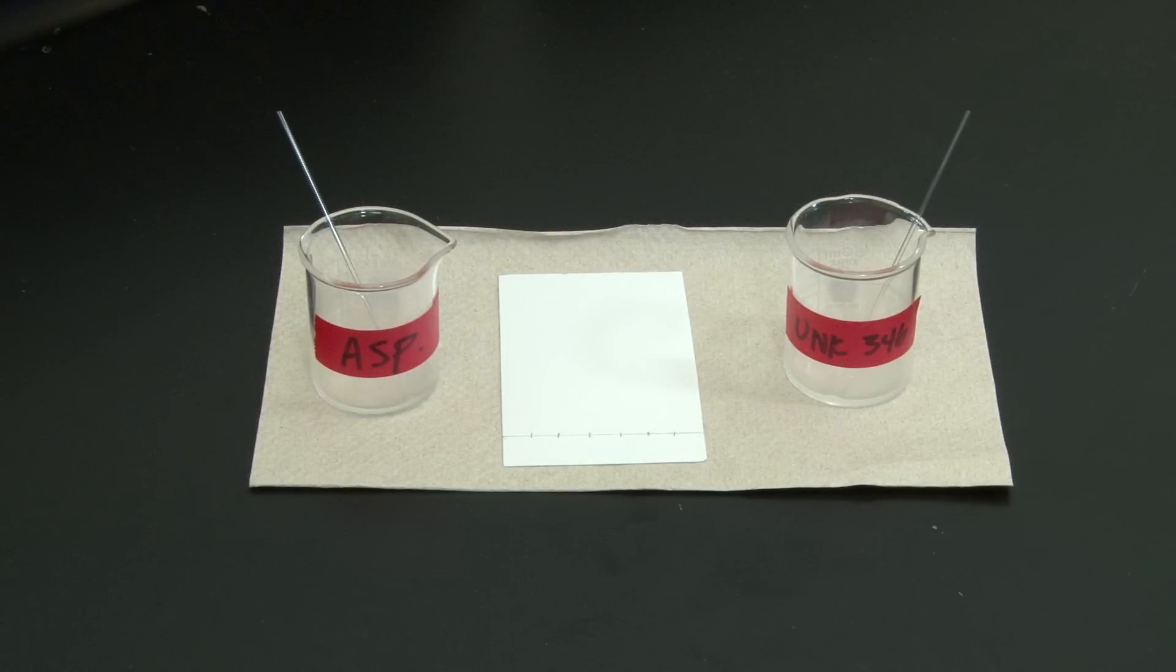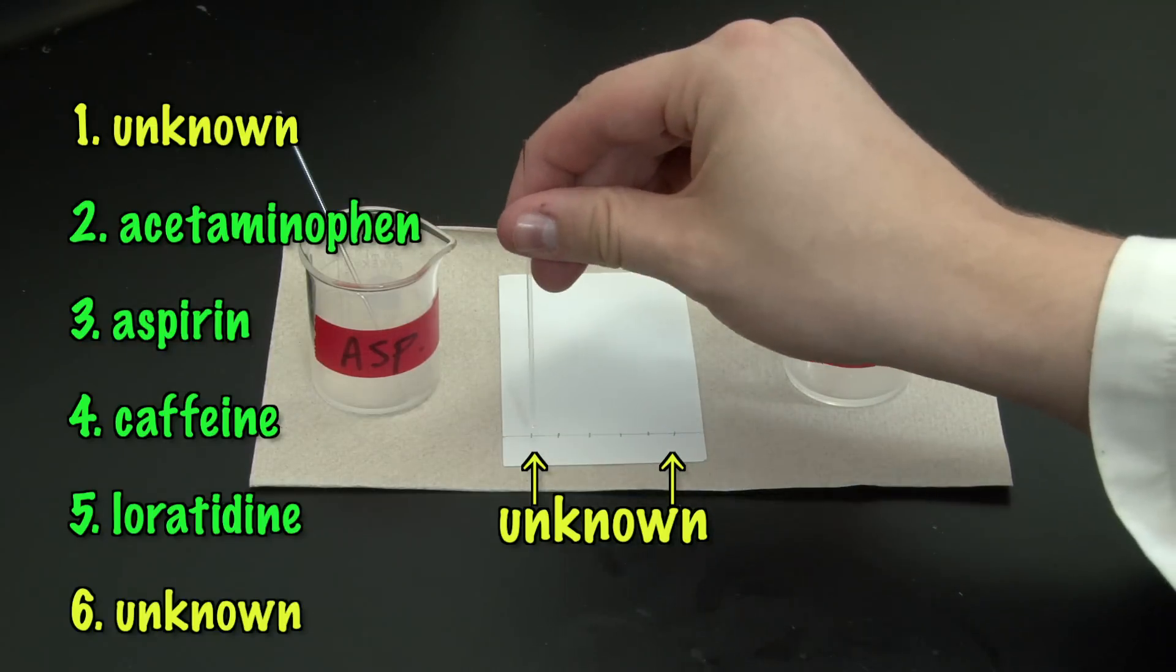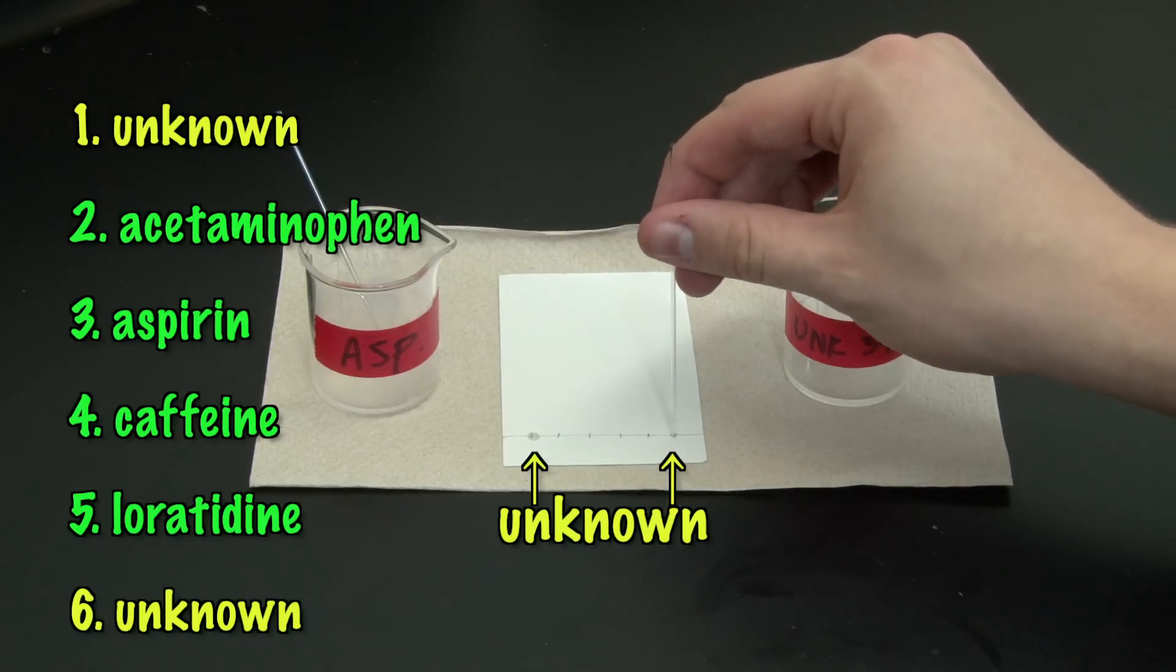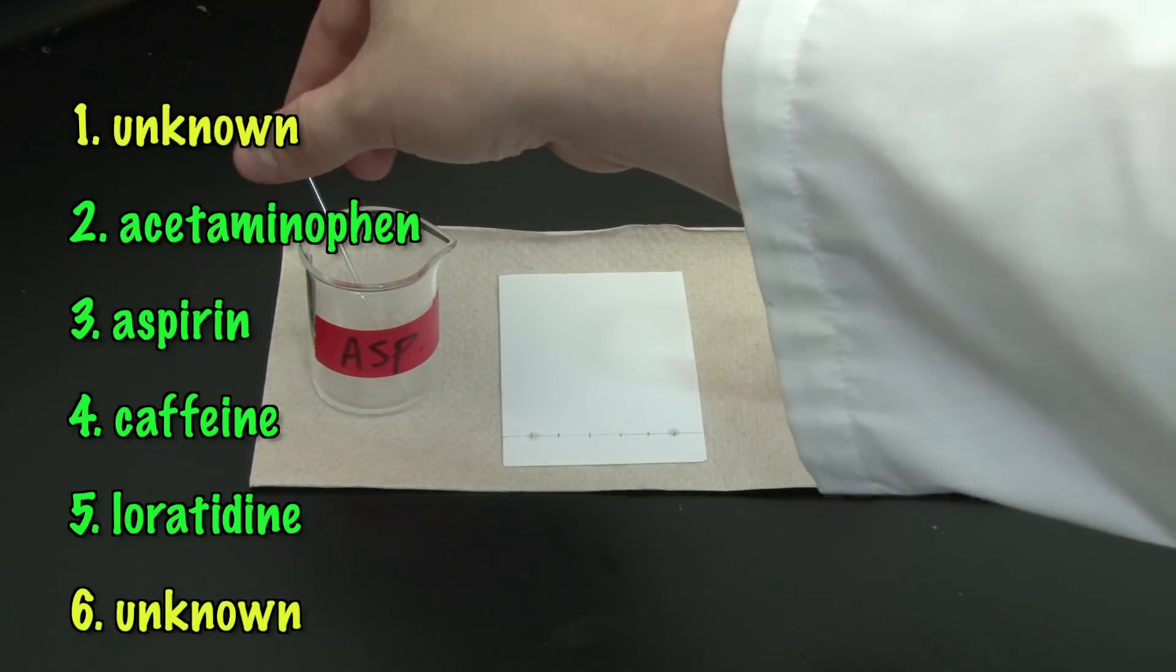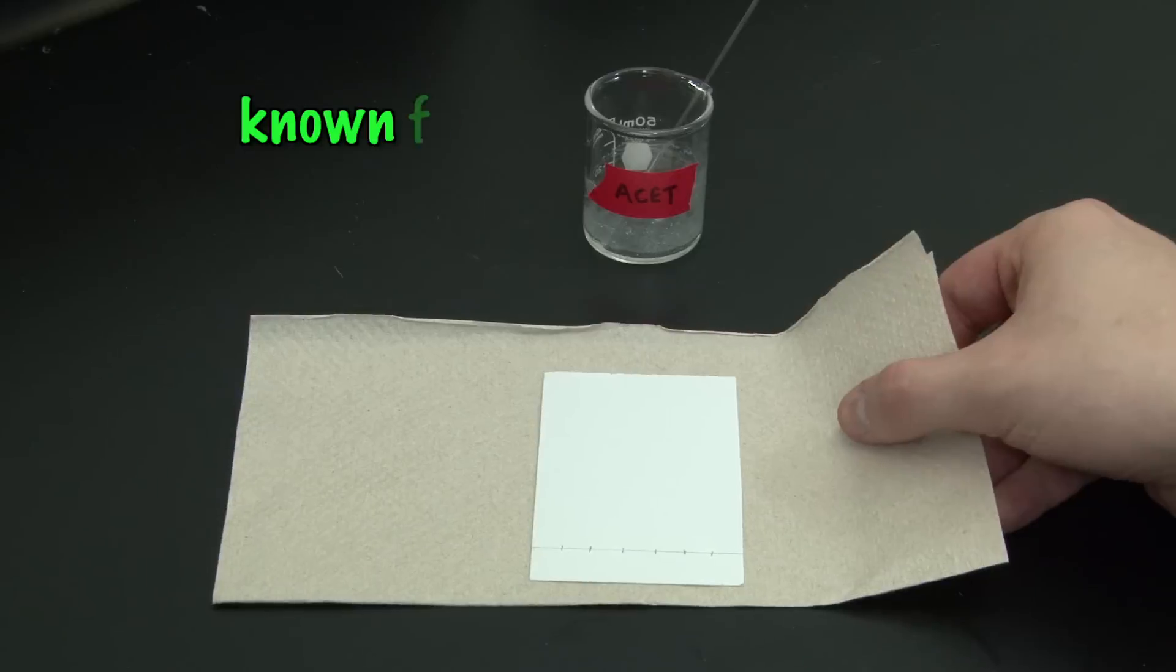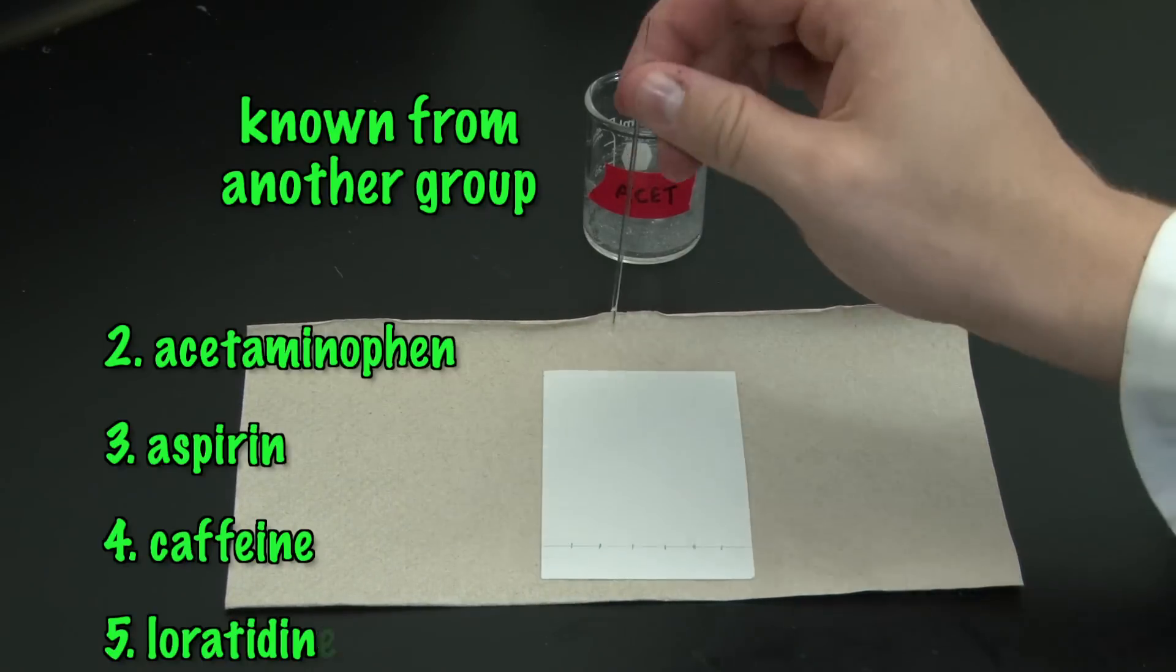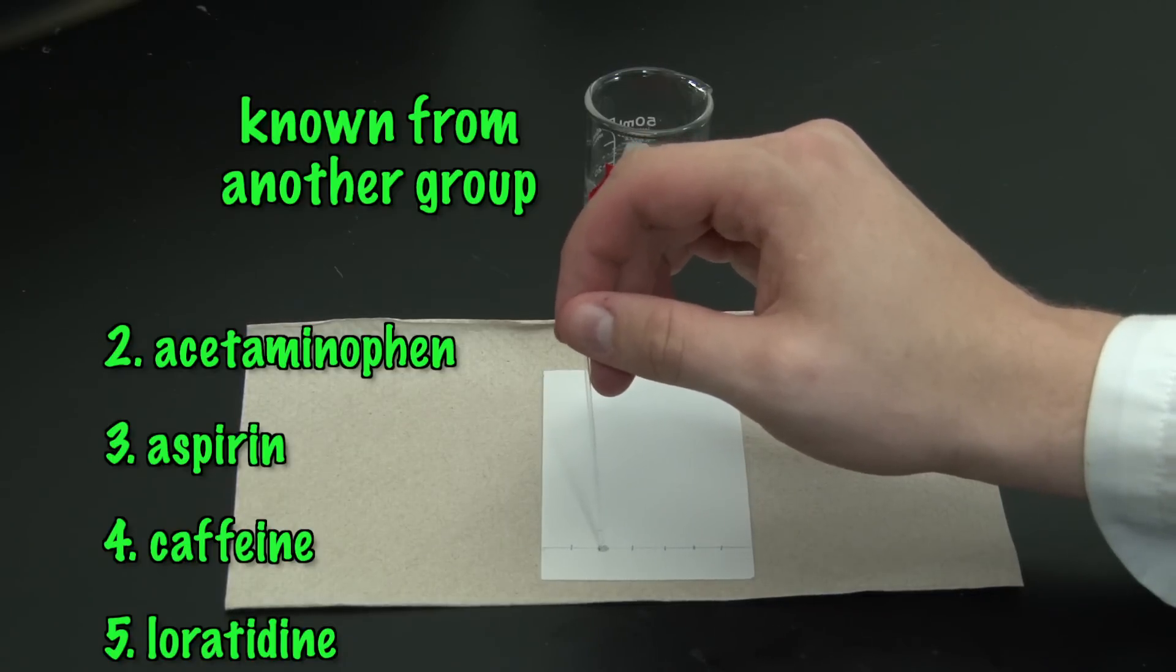Now, apply the known and unknown drug samples to your TLC sheet in this order. Your unknown will be in the outermost positions, 1 and 6, and the known samples that you and your classmates prepared will be in the inner positions, 2 through 5. This way, your unknown is spotted on both sides of the knowns you're comparing it to. Spot your unknown in positions 1 and 6, and spot the known that you prepared in its correct position. Then, take your TLC sheet around the room, using the known samples that other groups prepared, until you have all the samples spotted on your TLC sheet in their correct positions.